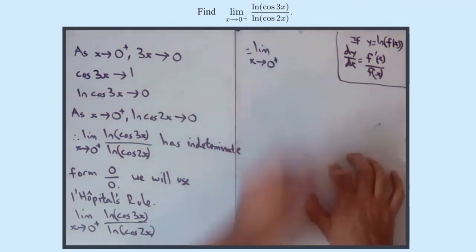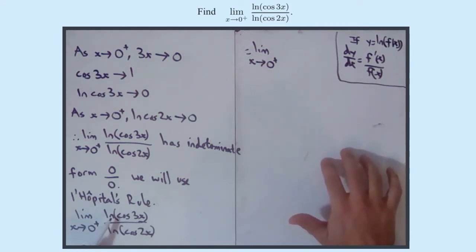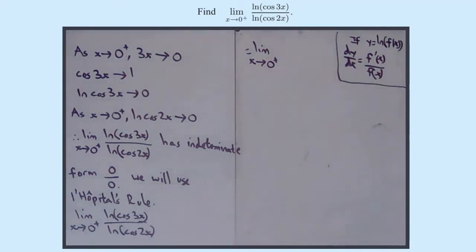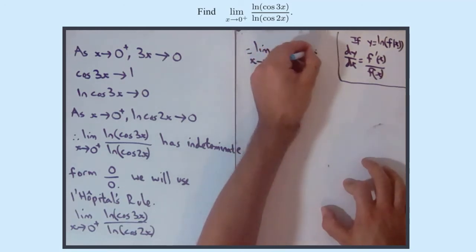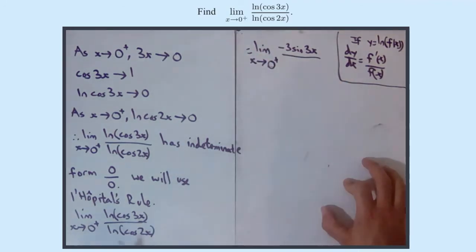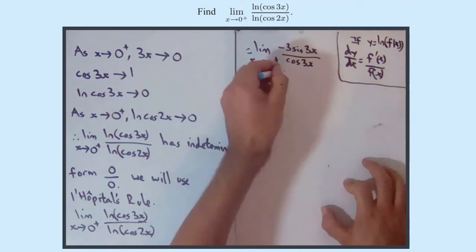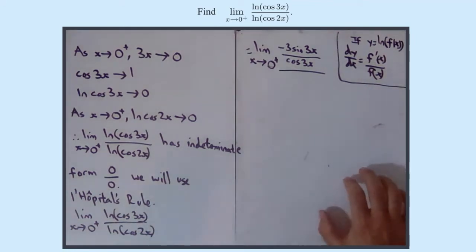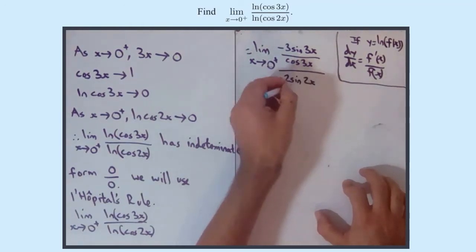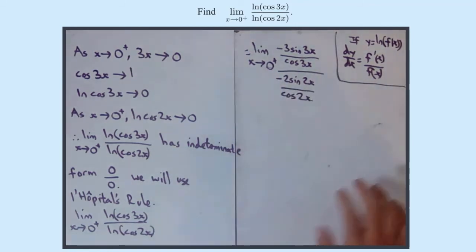So for this limit, we need to get the f'(x) over f(x). For the numerator, f(x) is cos 3x, so using the shortcut chain rule, the derivative of cos 3x is minus sine 3x, and pulling out the 3 gives minus 3 sine 3x. That's the f'(x), and f(x) is just cos 3x. In exactly the same way on the bottom, you get minus 2 sine 2x over cos 2x.